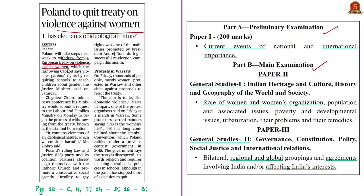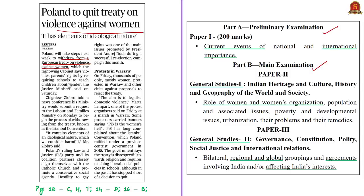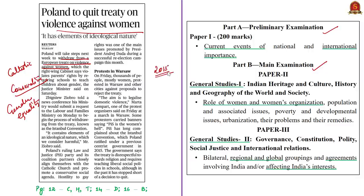Why has Poland taken this decision? Poland's ruling Law and Justice party is closely aligned with the Catholic Church and promotes a conservative social agenda. They are against most progressive reforms like gender equality and gay rights. The present government says the treaty is disrespectful towards religion because it requires teaching liberal social policies in schools. Citing such reasons, Poland has decided to quit this treaty which it ratified in 2015, even though people of Poland are against this decision and protests are happening in Warsaw, the capital of Poland.